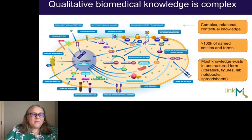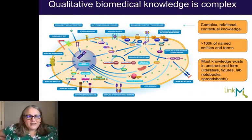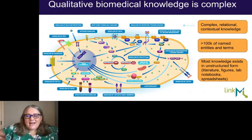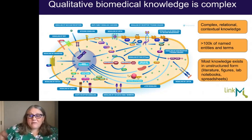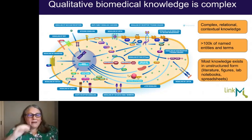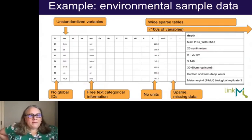But quantitative biomedical and biological knowledge is really complex. It's not necessarily relational. There are a lot of connections and components that switch on and off. We have hundreds of thousands of named entities and terms, and most of our knowledge is still in unstructured formats — like literature, figures, lab notebooks, spreadsheets — and that can make it difficult to interoperate with.